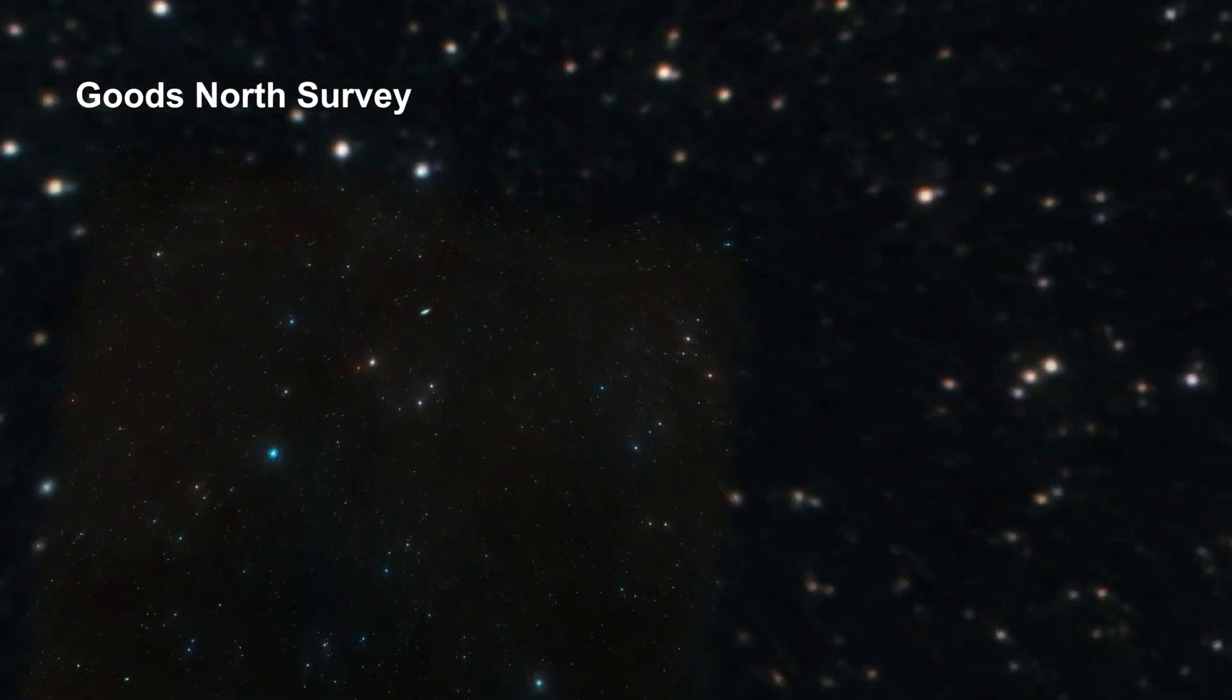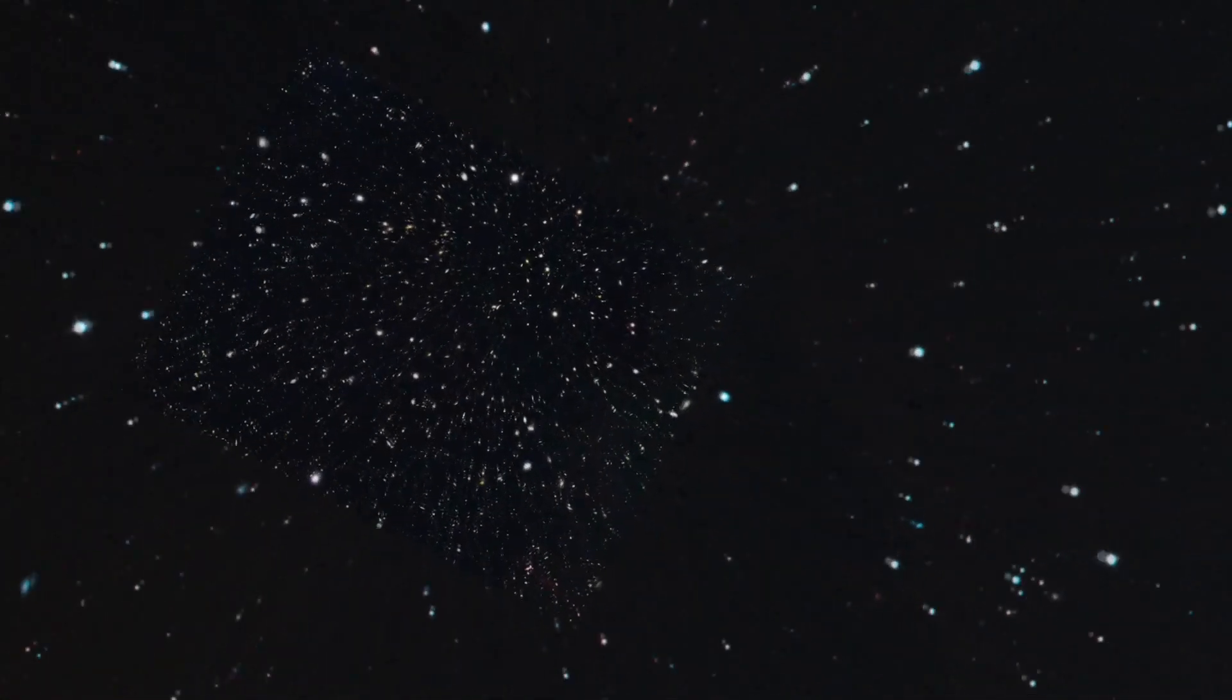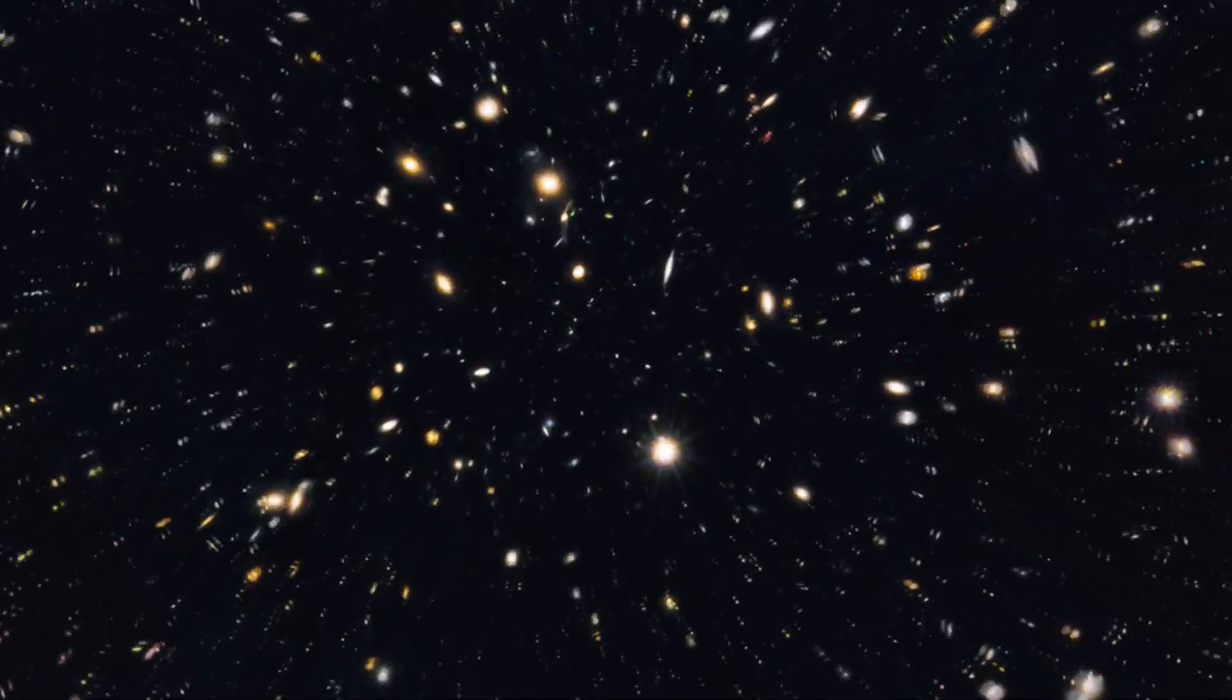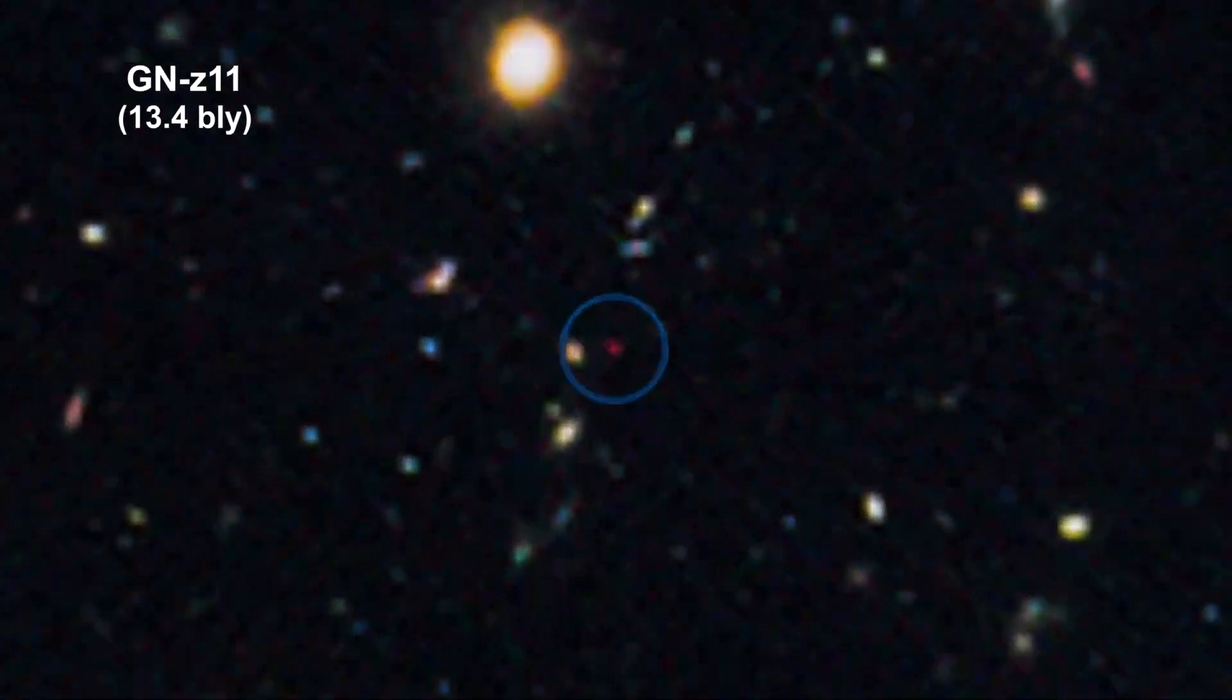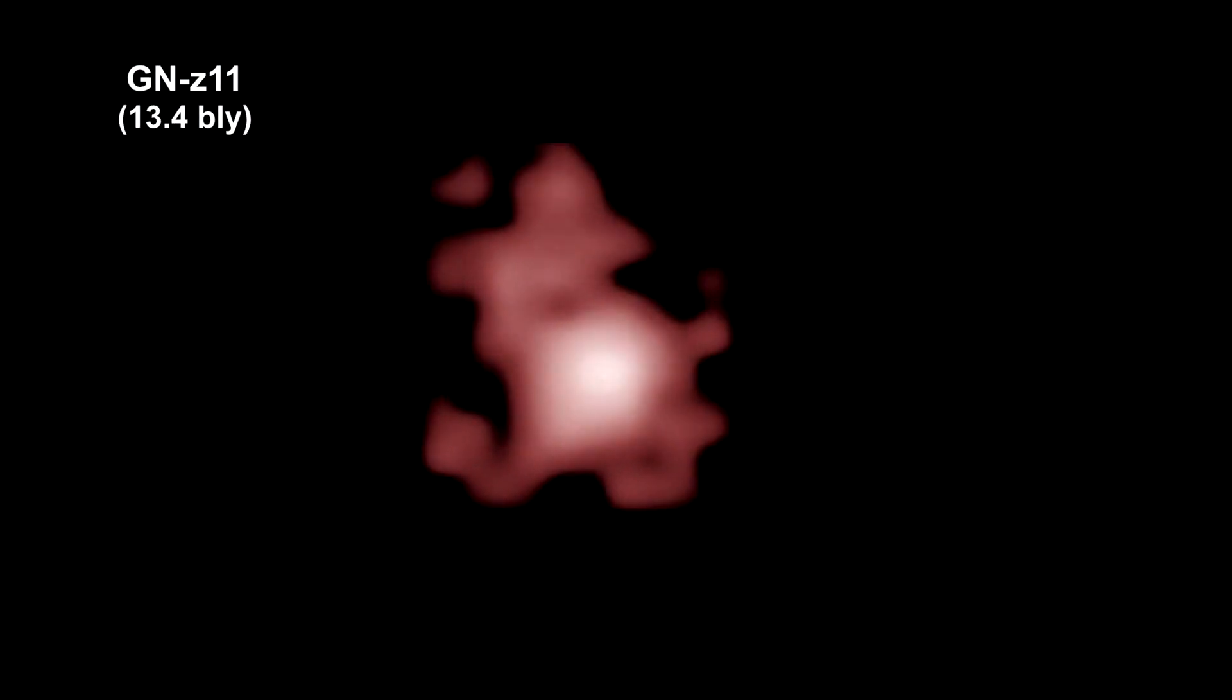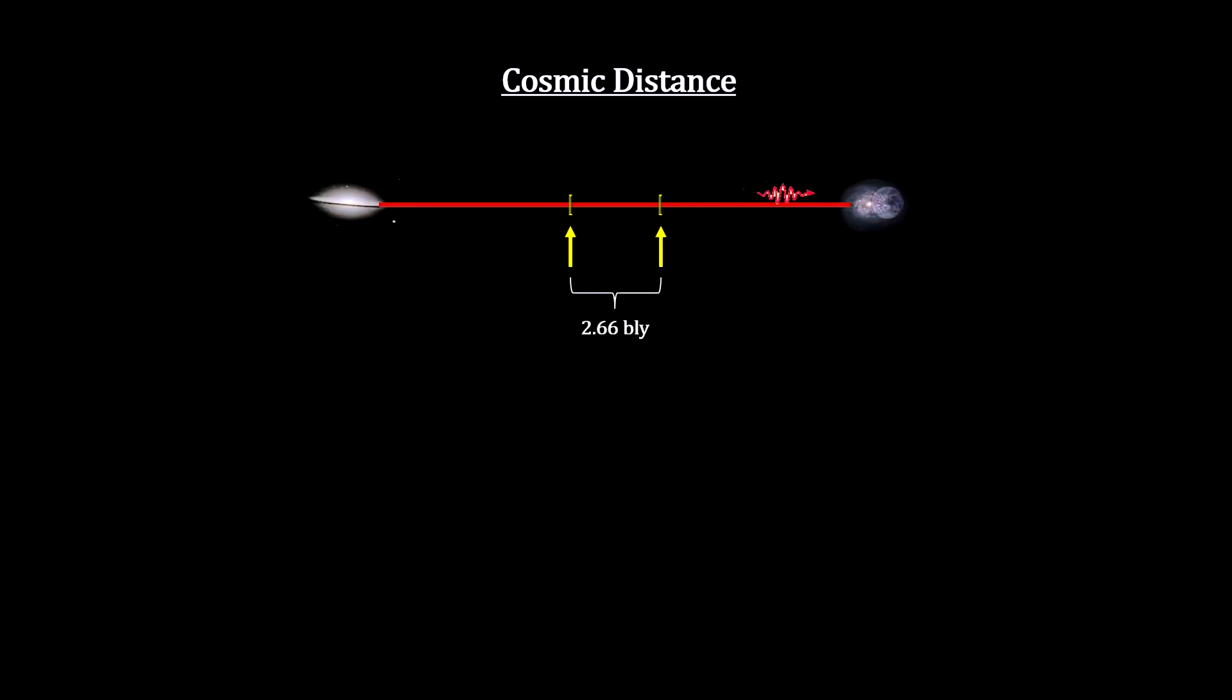Expanding space has significant implications for measuring distance. Here we are zooming into GNZ 11, the most distant object ever found. The galaxy's redshift, combined with Hubble's law, gives us the distance the light traveled, 13.4 billion light years. And we know the speed of light, so the time traveled was 13.4 billion years. We normally say that the galaxy is therefore 13.4 billion light years away. But during its long travel time, space expanded considerably. In fact, GNZ 11 was less than 2.7 billion light years away from us when the light started its journey, and the galaxy is now over 30 billion light years away.